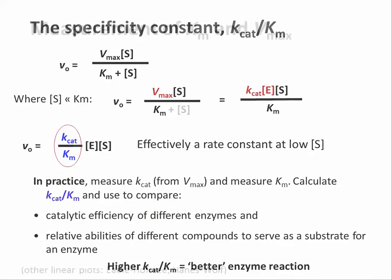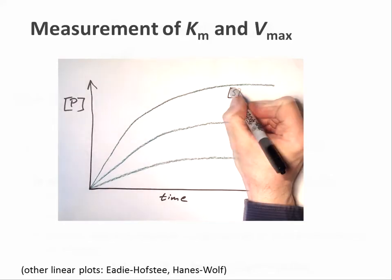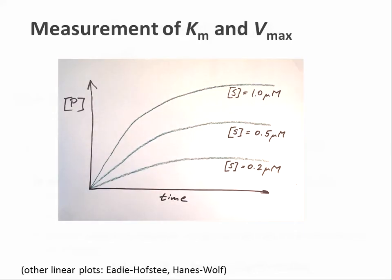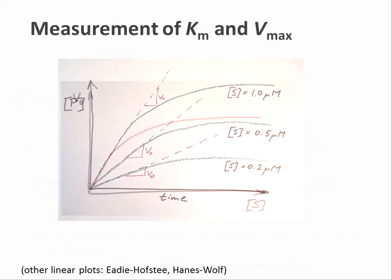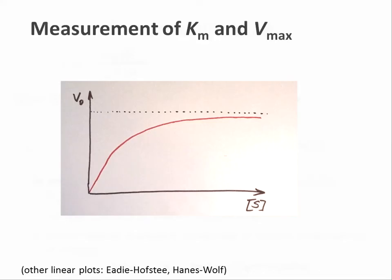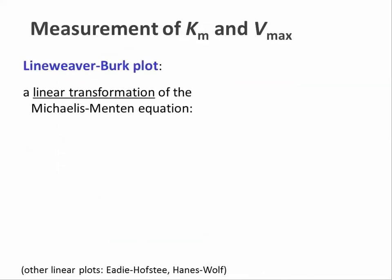When we measure enzyme kinetics and find V0 values for a range of substrate concentrations, it would be difficult to estimate V0 for saturating substrate concentrations because of the asymptotic nature of the graph. A practical solution for this is the Lineweaver-Burk plot, a linear transformation of the Michaelis-Menten equation obtained through simply inverting both sides of the equation and a little bit of rearrangement.